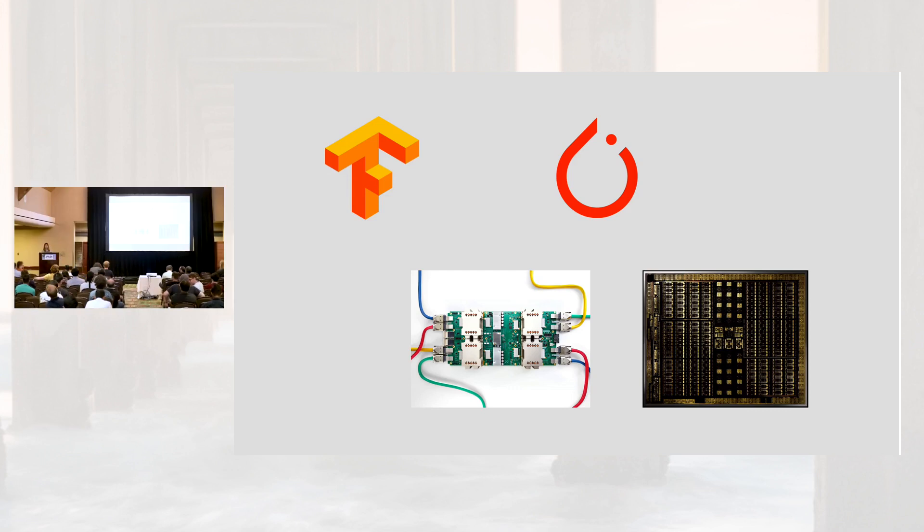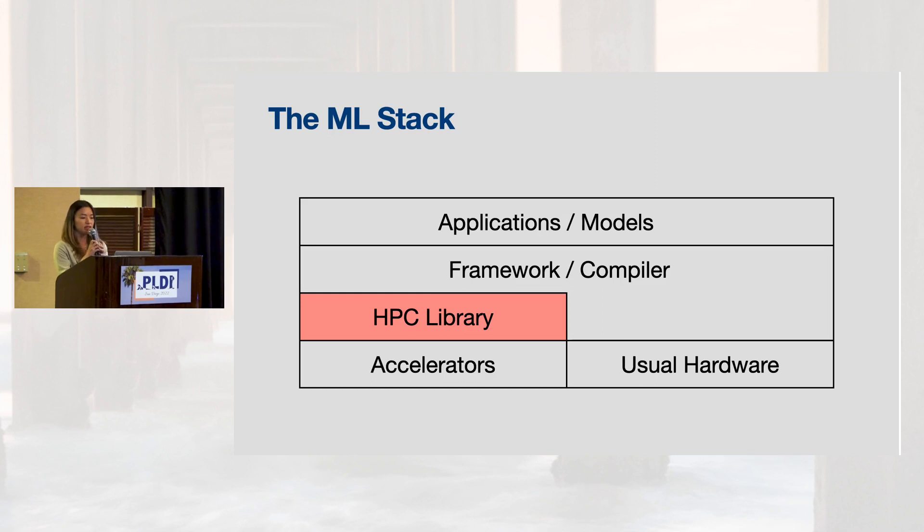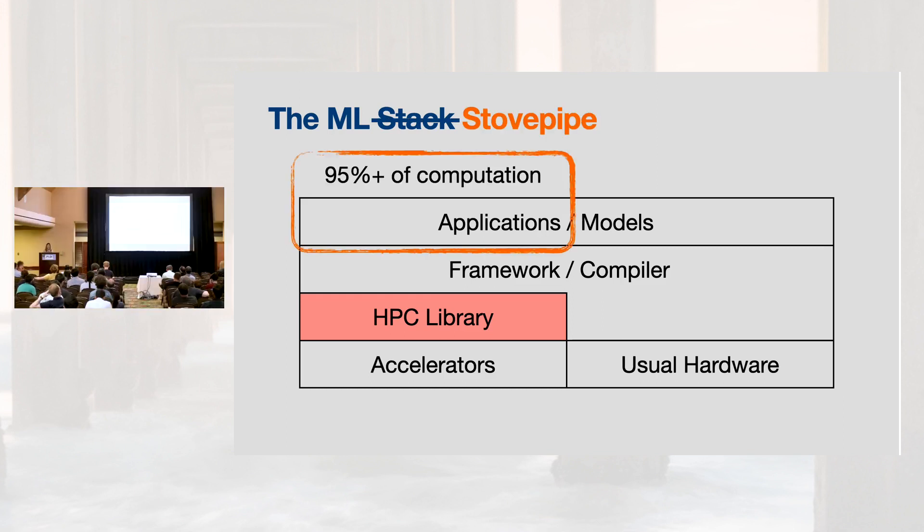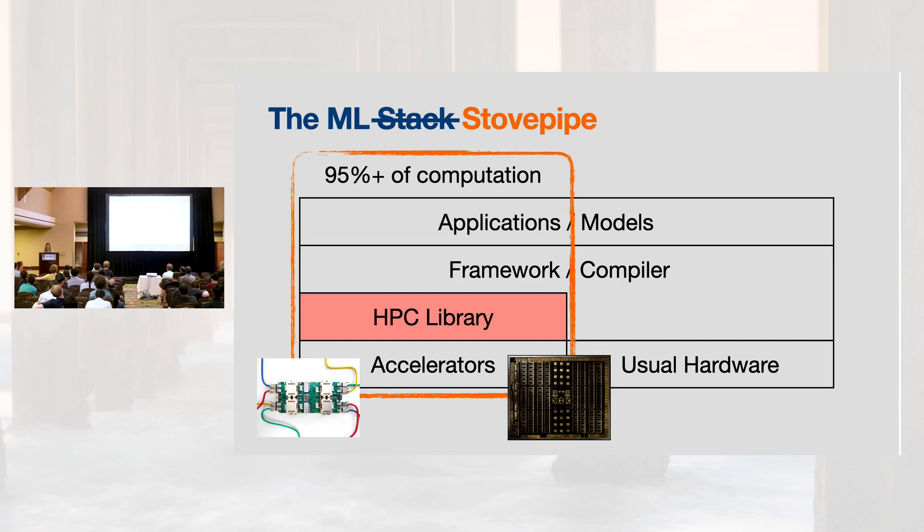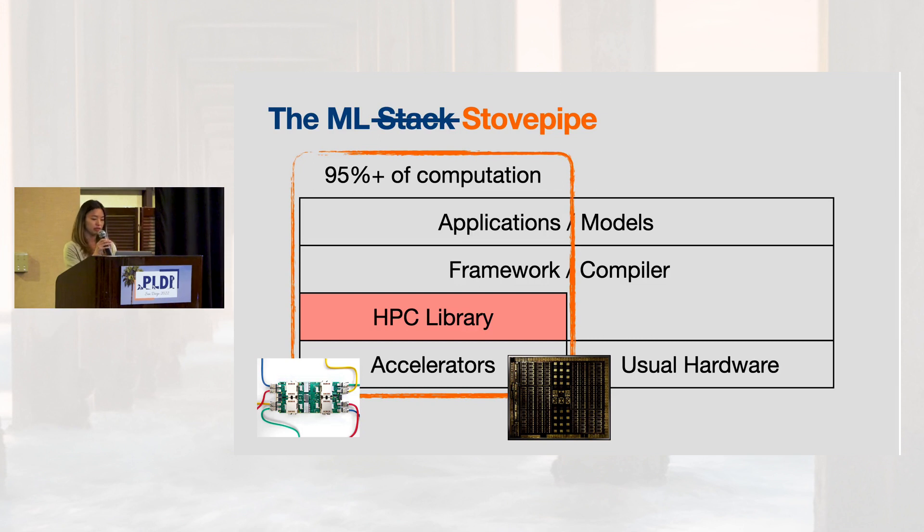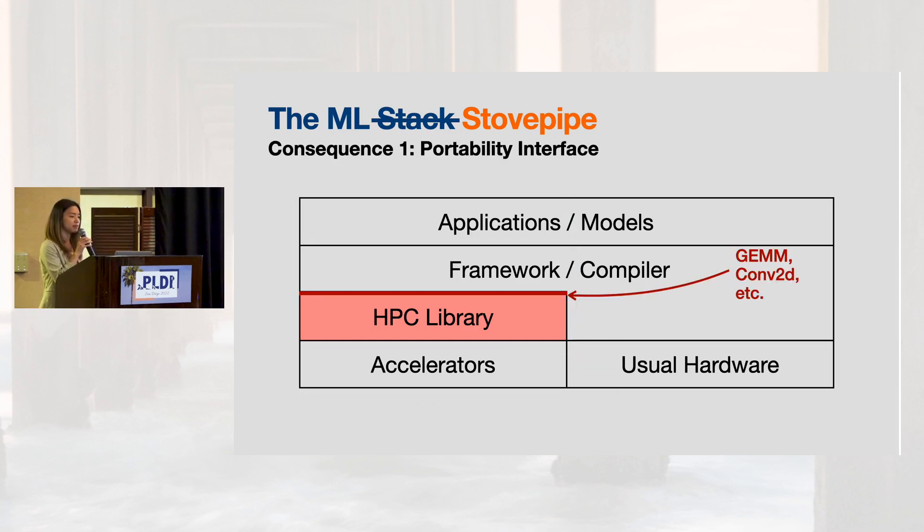A lot of the highest performance code and hardware today can be found in machine learning systems, but how did these systems deliver their performance? The architecture you often see uses a stovepipe system design. Models built from dense and convolution layers can be targeted down to hand-tuned HPC code running on custom accelerators like Google's TPUs or Apple's neural engine. One consequence of this system design is a key portability interface is defined by HPC library APIs and not by the hardware ISAs. A second consequence is that all performance gains from accelerators are limited by the efficiency of this library code.